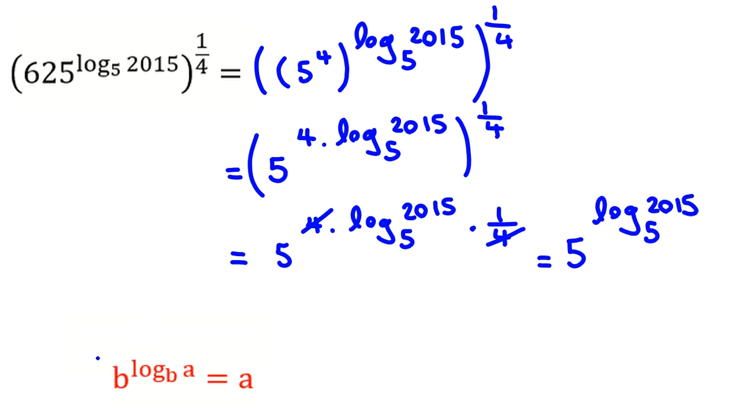We have this basic rule in logarithm: b to the power of log b of a equals a. So here if we want to apply, b is 5 and a equals 2015, and it will be exactly the left-hand side of this.